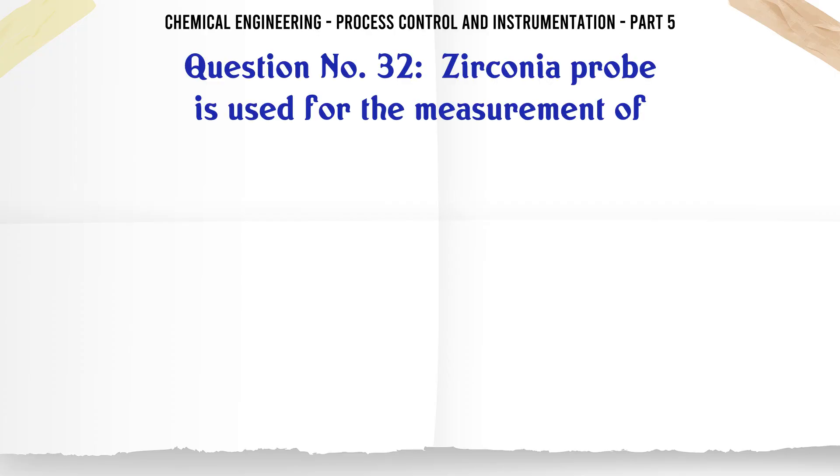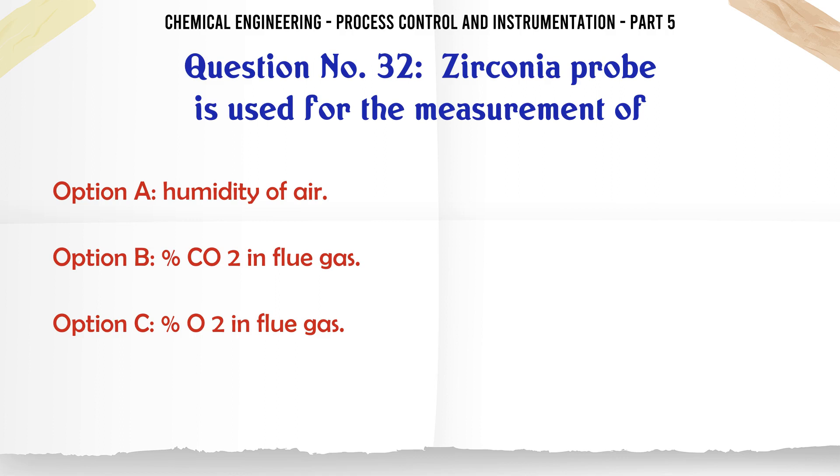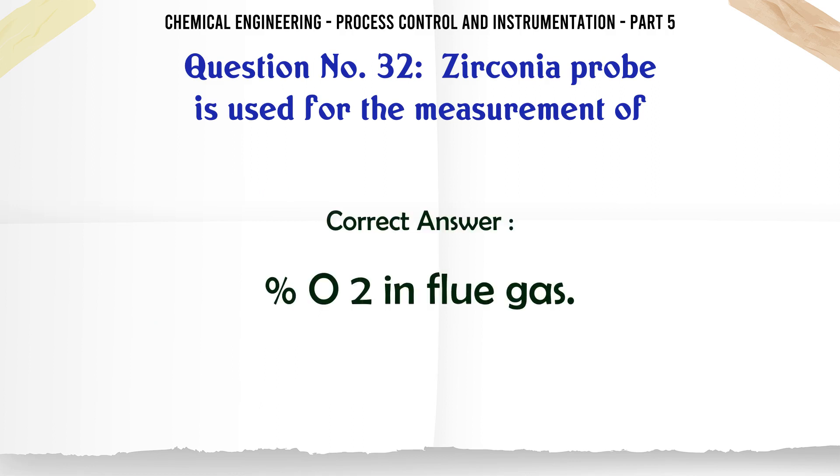Zirconia probe is used for the measurement of: A. Humidity of air. B. CO2 in flue gas. C. O2 in flue gas. D. Speed of a submarine. The correct answer is O2 in flue gas.